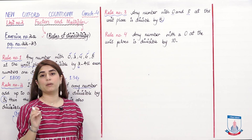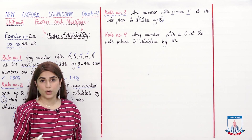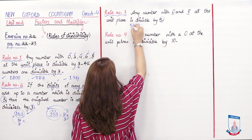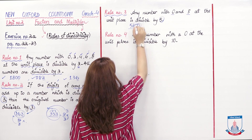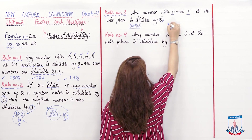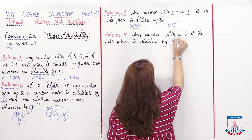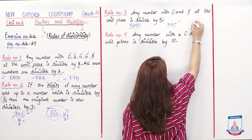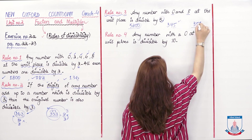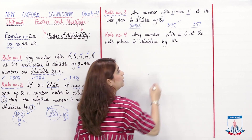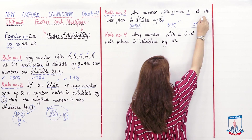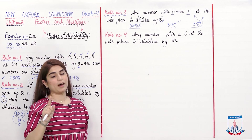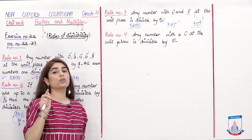Multiples of 5 are only those numbers whose unit digit ends in 0 or 5. For example, 5,250 — it ends in 0, so it is divisible by 5. The number 345 — it ends in 5, so it is divisible by 5. However, the number 351 — it ends in 1, so it is NOT divisible by 5. Only numbers ending in 0 or 5 are multiples of 5.